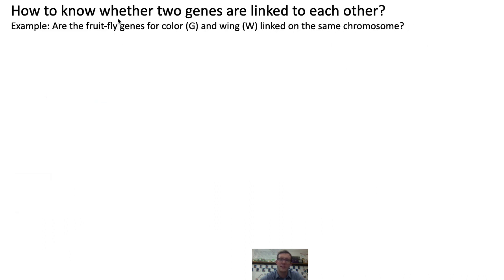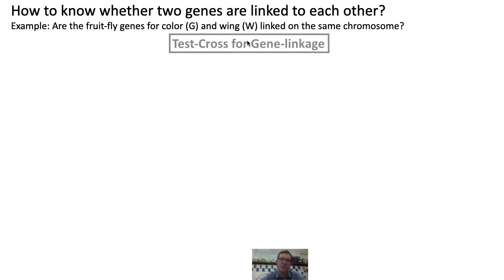So how could biologists determine whether two genes are linked to each other on the same chromosome? In our example, how could a biologist determine whether fruit fly genes for body color and wing type are on separate chromosomes or on the same chromosome? Well, what biologists will do is something called a test cross, and test crosses are pretty straightforward.